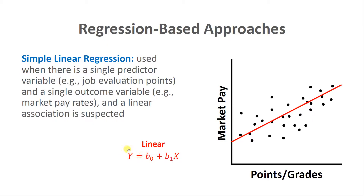The typical equation for a line applies here: the outcome variable y, or market pay rates, equals the intercept b-sub-zero — where the line crosses the y-axis when x equals zero — plus b-sub-one, the slope, representing the rise over the run of the line. You would typically expect a market pay line to have an upward trajectory, meaning jobs that are worth more are paid more. Here, x refers to points or grades.